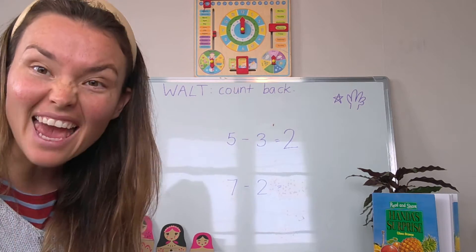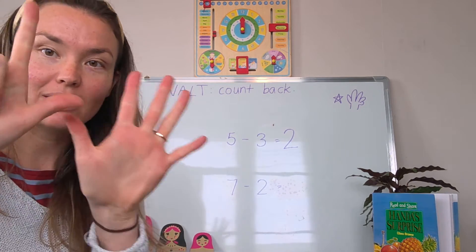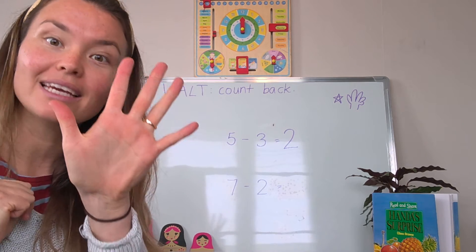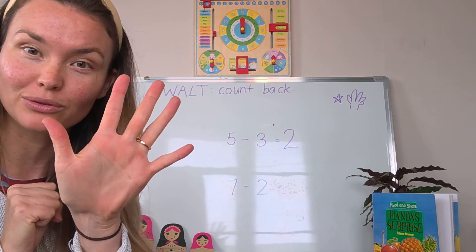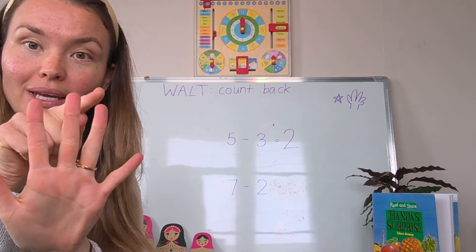Now we need to take away two. That means get rid of two. So seven take away two. What's left children? Count what is left. One, two, three, four, five.